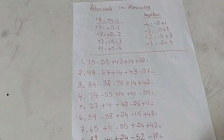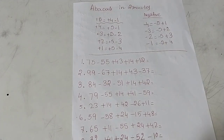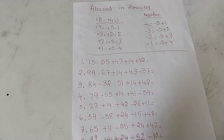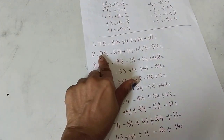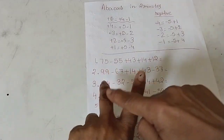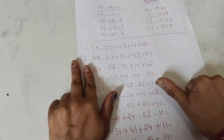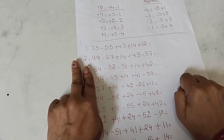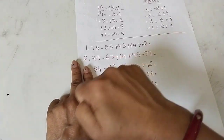I have given some examples — you can pause the video and take all the questions and carry on. Let's get started: 75 minus 55 plus 43 plus 14 plus 12. First, 75 — you already have the idea about the fingers: 50, 60, 70, 75. Then minus 55.